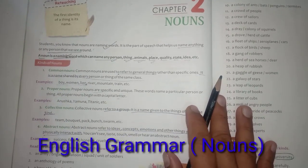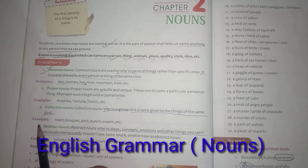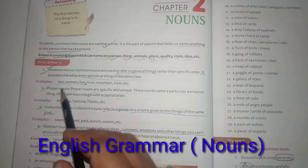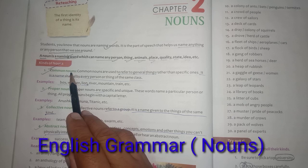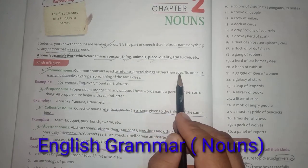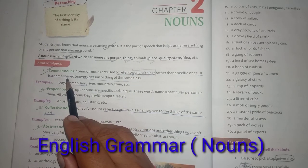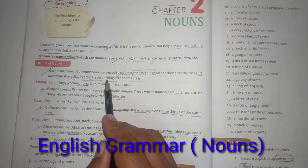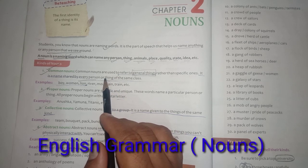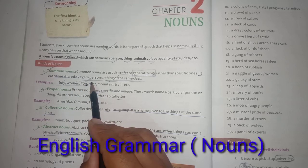Now let us see the kinds of noun. There are four kinds: common noun, proper noun, collective noun, and abstract noun. Common nouns are used to refer to general things rather than specific ones — it is a name shared by every person or thing of the same class. Examples include boy, human, lion, river, mountain, train.